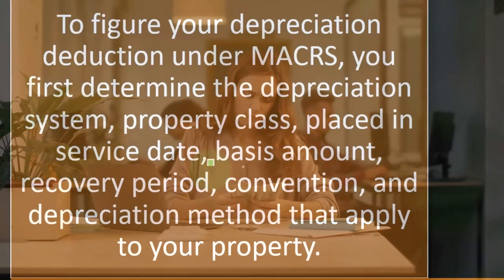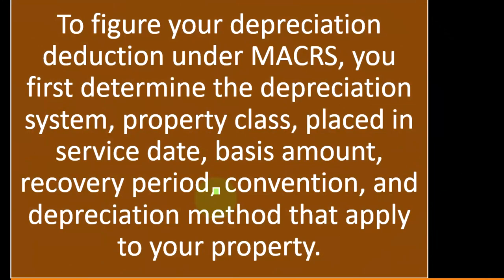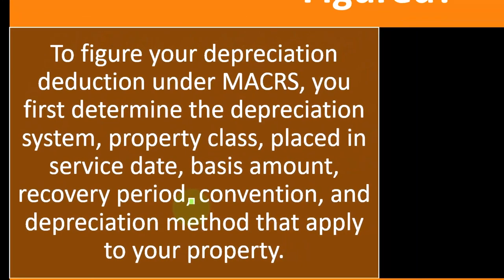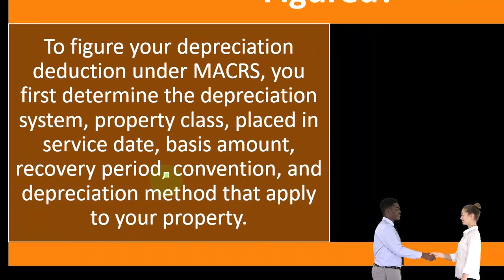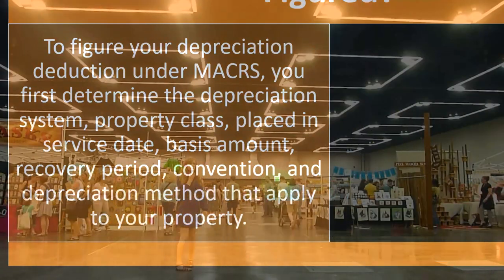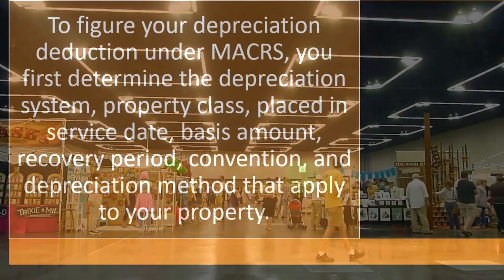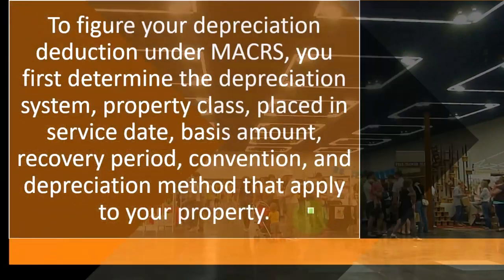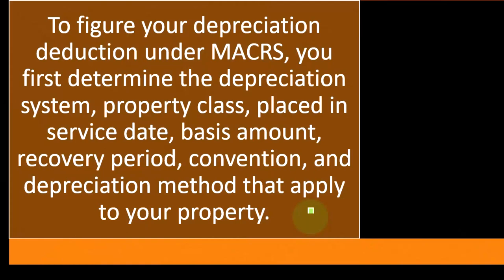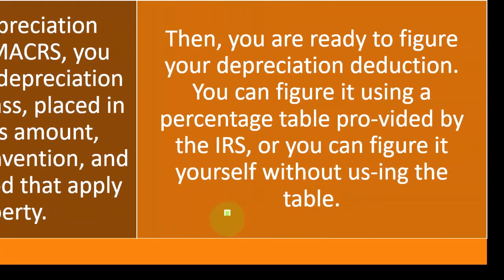Basis can be a little more complex in certain cases, but the general idea is cost. The recovery period — how many years we're going to depreciate over — is determined in part by the property class, which is dictated by the system used. The convention, which is also dictated by the conditions chosen, determines whether it's half-year, mid-month, or mid-quarter. The depreciation method applies double declining balance at 200%, 150%, or straight-line. Typically we choose the default — the highest depreciation method, which is double declining — and then Section 179 and special depreciation layer on top of that.